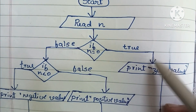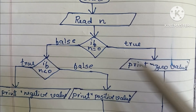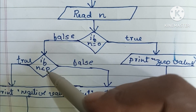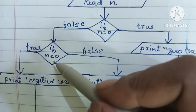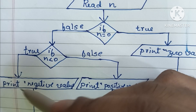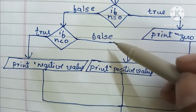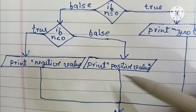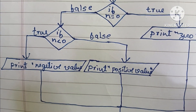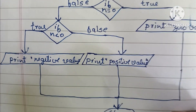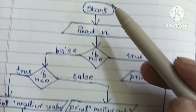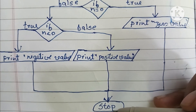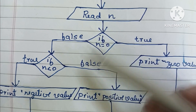If N equals zero, print zero value. If false, check N less than zero — if true, print negative; if false, print positive value. Finally, combine all outputs with the stop statement.